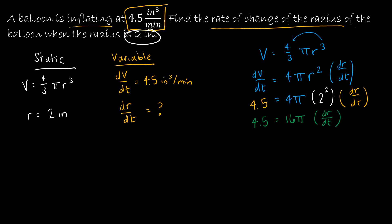And of course, I want to get dr over dt by itself. So that leaves me with 4.5 divided by 16π. And that's an exact result. But typically, we're going to go ahead and find a decimal approximation instead.